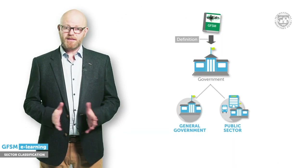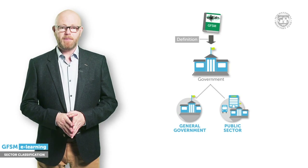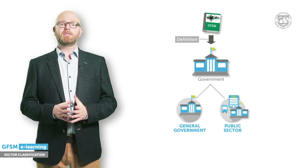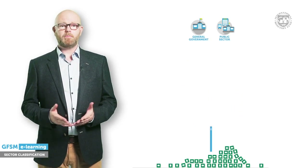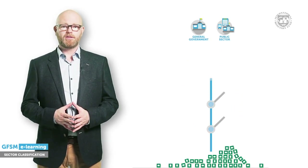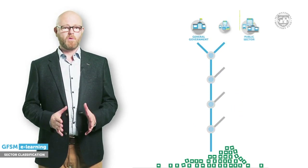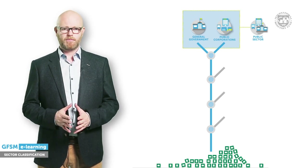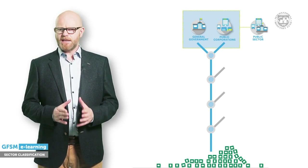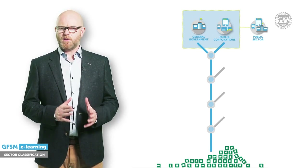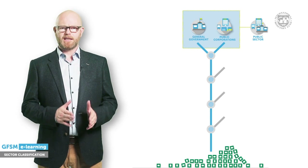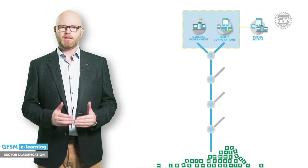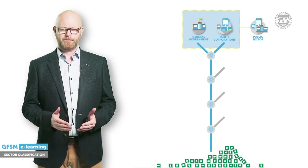This can be illustrated best by using a decision tree. Let's look at a path along this tree and its four main decision nodes. By answering the questions along the path, all units can be classified in a systematic way.